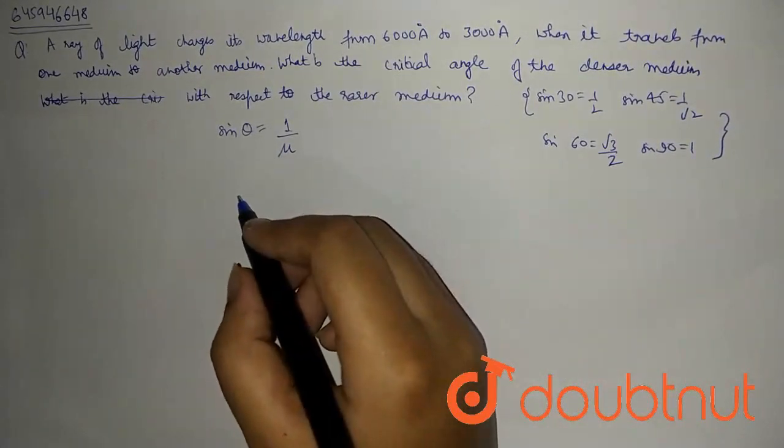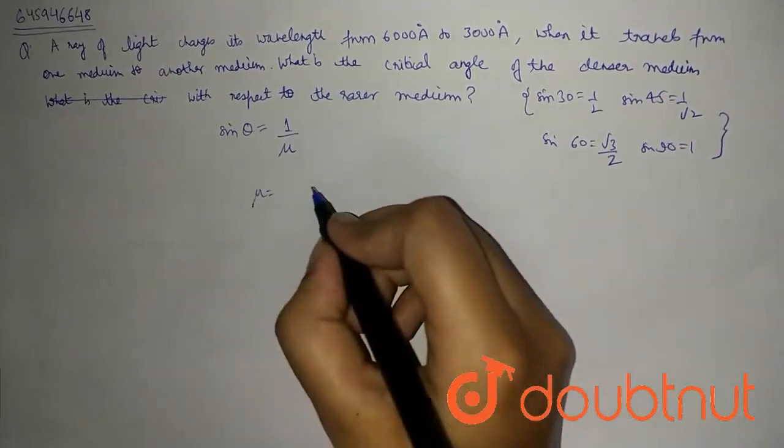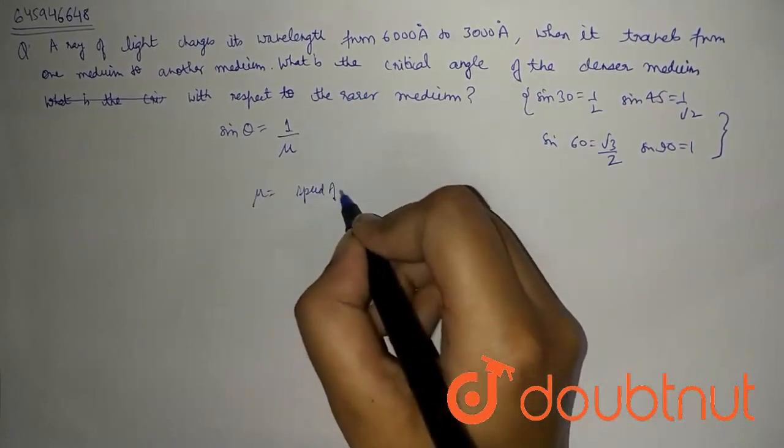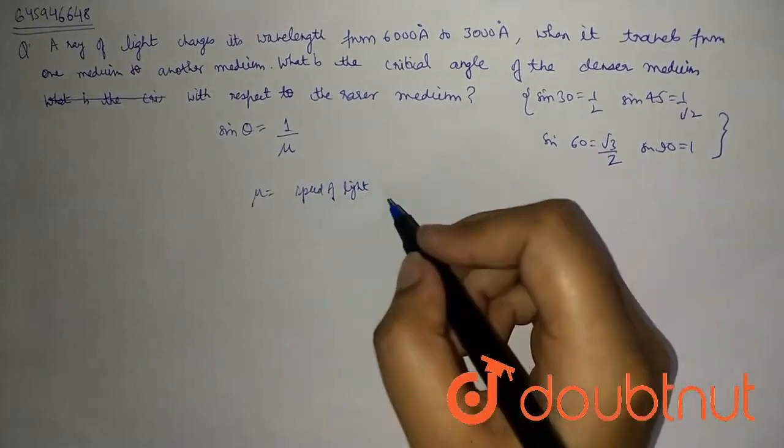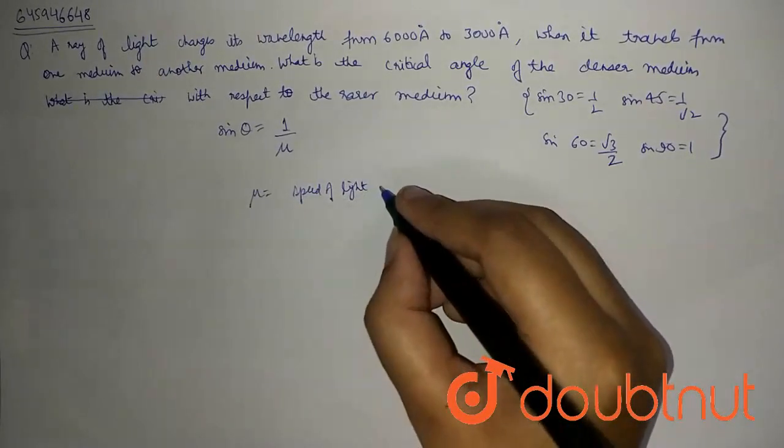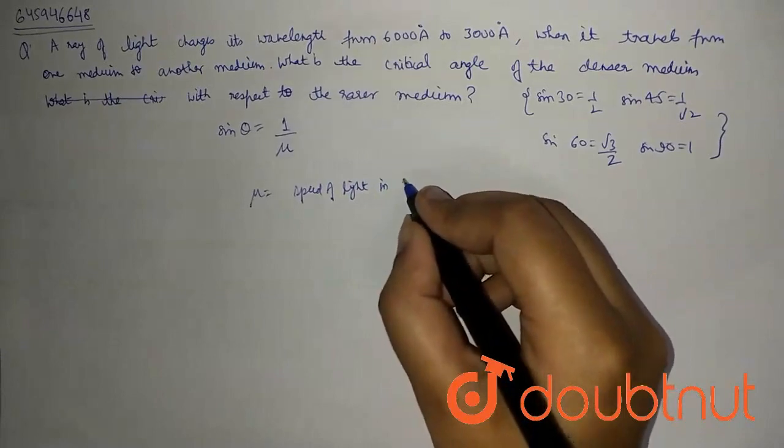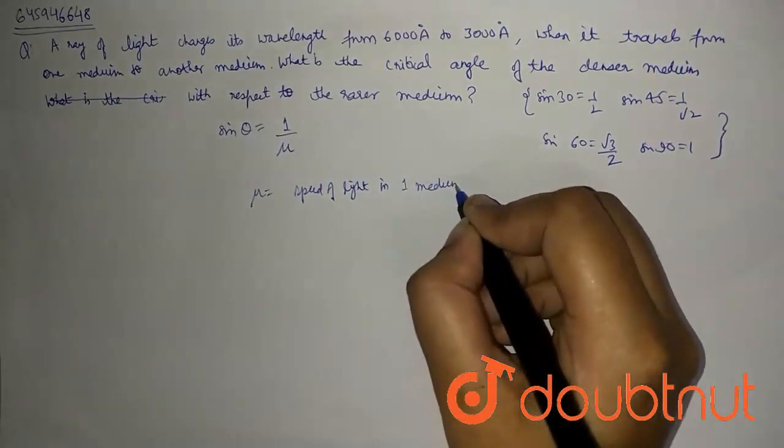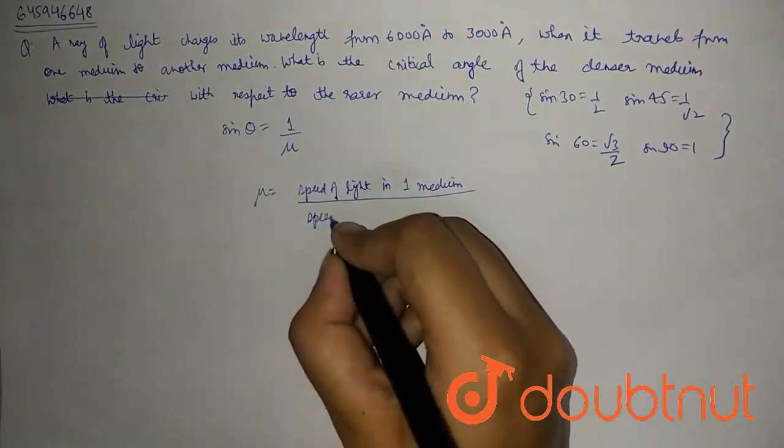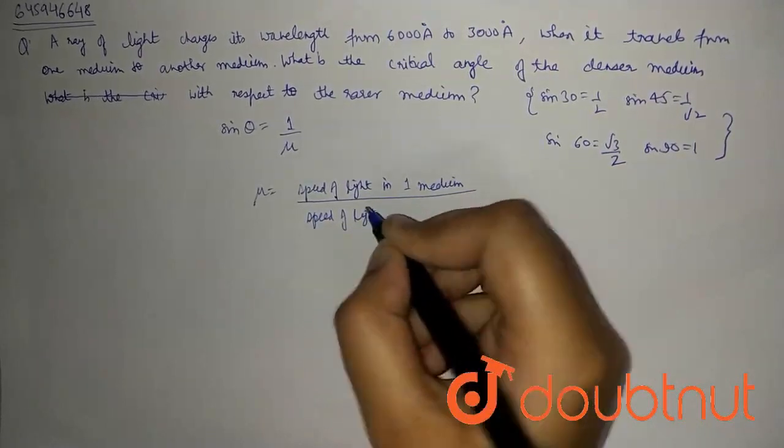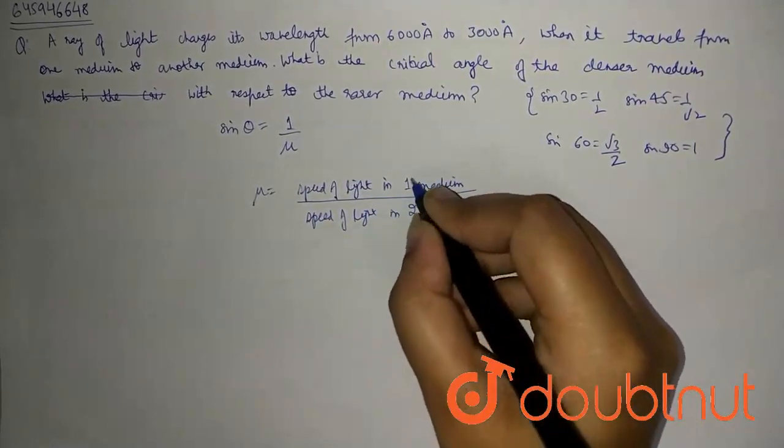We need the speed because refractive index equals speed of light in first medium divided by speed of light in second medium.